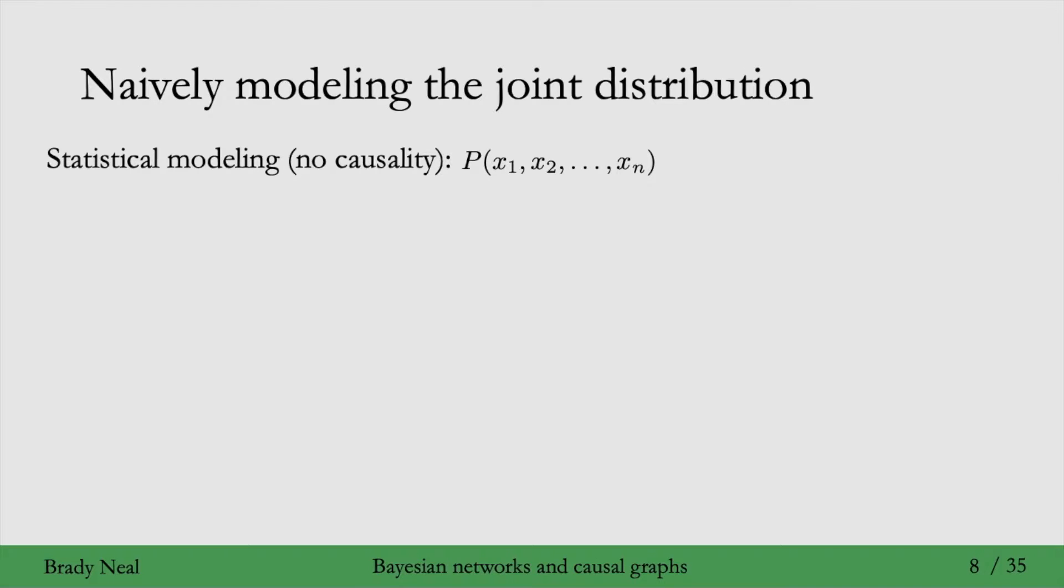So that means we're modeling the joint distribution over n variables here, x1 through xn. And just from the chain rule of probability that always applies, we get this decomposition here. If we write that out for n equals 4, then we get this specific factorization: P of x1 times P of x2 given x1 times P of x3 given x2 and x1 times P of x4 given everything before it.